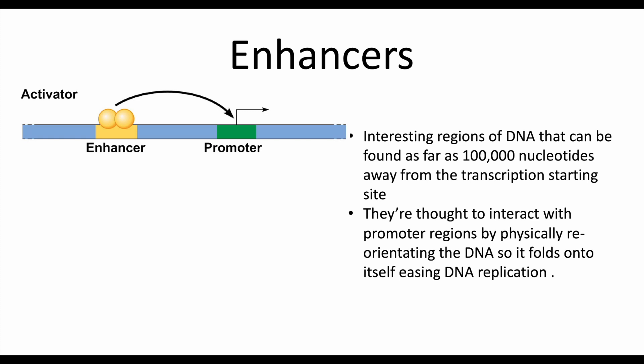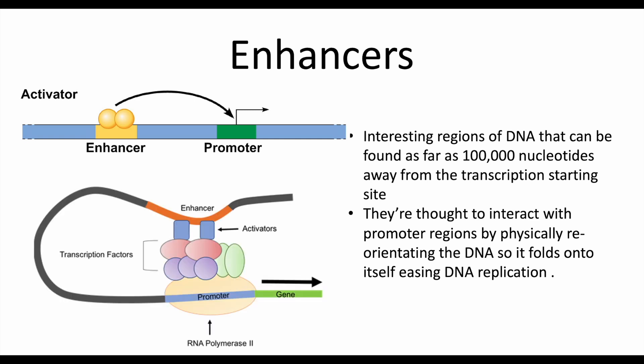Something extremely interesting is that an enhancer doesn't have to be near a promoter — it can be as far as 100,000 nucleotides away from the transcription starting site. They're thought to interact with the promoter regions by physically reorienting the DNA so that it folds in on itself, making it easier to undergo transcription, as annotated by the second figure. DNA is highly mobile, and these proteins can recruit other transcription factors and help fold the DNA for better transcription.